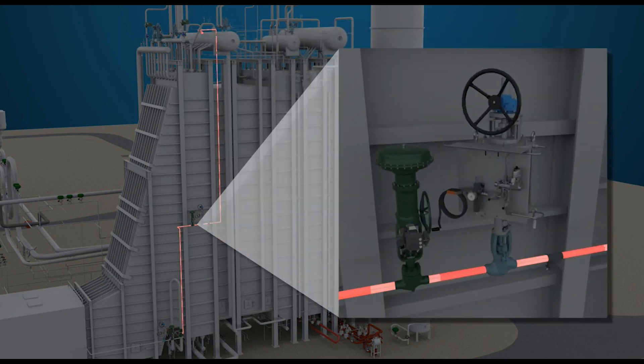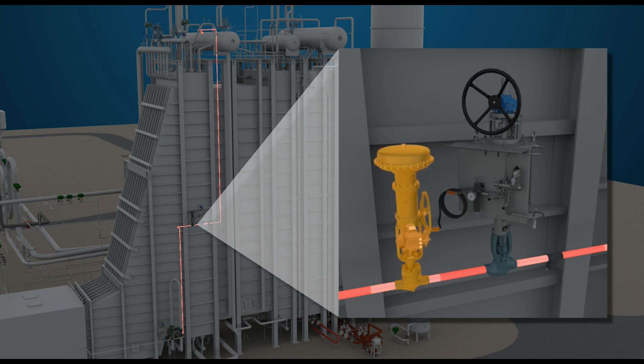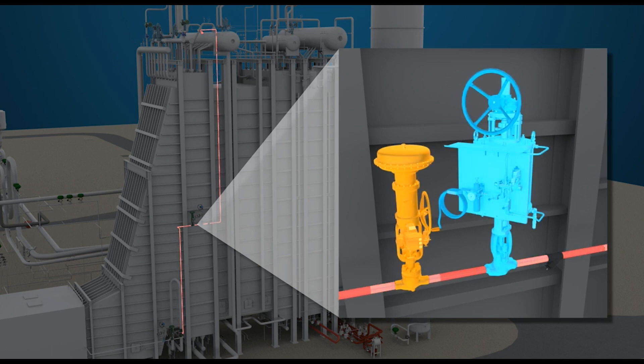An atomizing steam control valve such as the Fisher HPS and an isolation valve such as the Sivall VA500 are installed upstream of the nozzle.